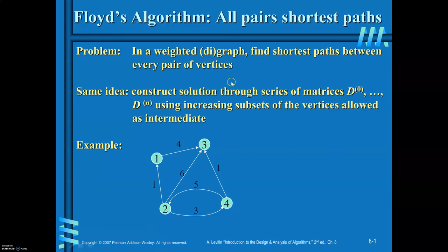The idea here is you are required to construct the solution through a series of matrices D0, D1, etc., up to Dn. D0 is initially the cost matrix you write for the graph. D1 is achieved when you introduce the first vertex as the intermediate vertex. D2 is when you introduce vertices 1 and 2 as intermediate vertices. So when you introduce all n vertices as intermediate vertices, whatever shortest path you achieve is indicated in Dn.